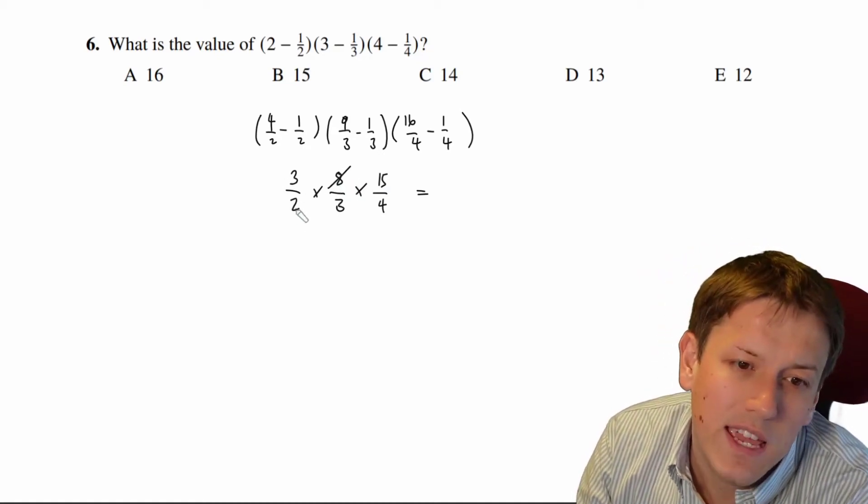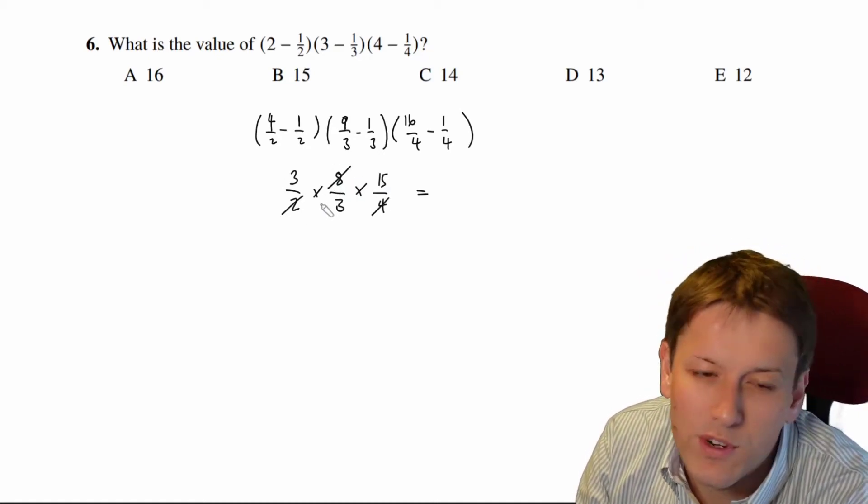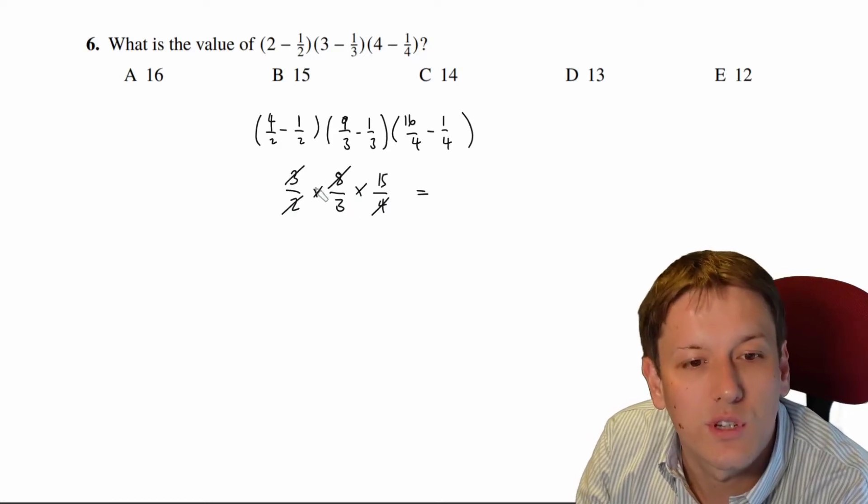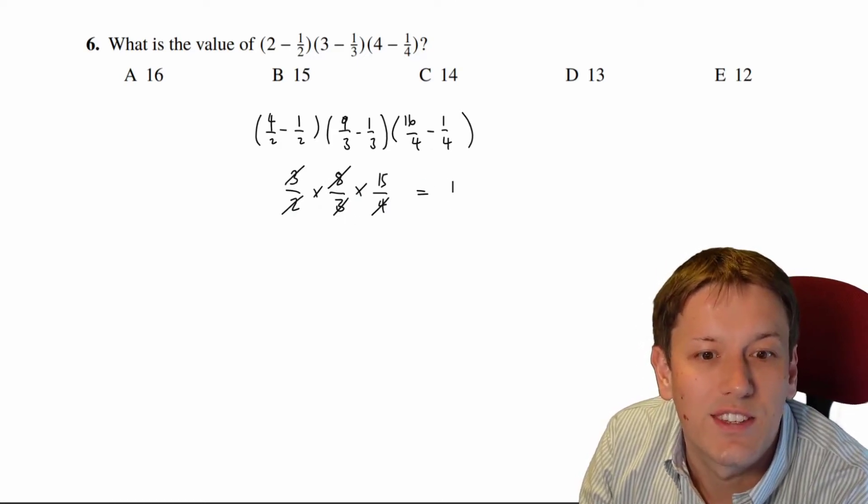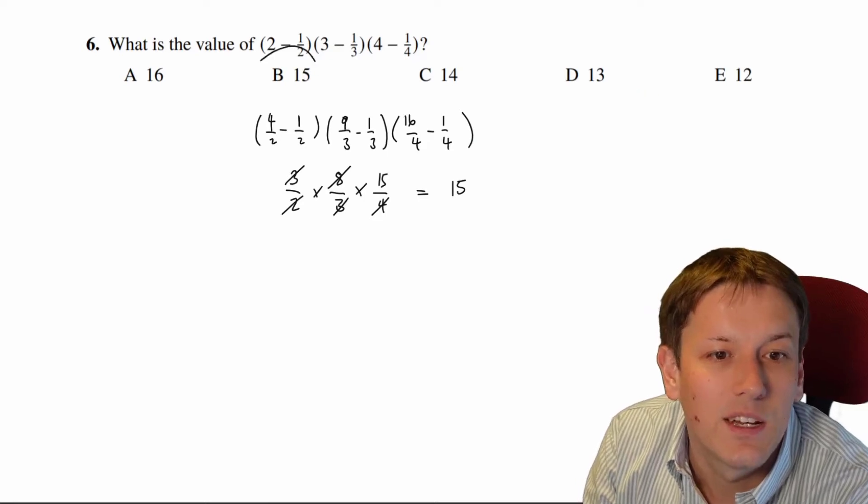Right, on the top here you've got a factor of 8, and there's a 2 and a 4, and 2 times 4 is 8, so they all cancel. And you've also got a 3 on the top and the bottom, so they cancel out, and so the answer here must just be 15, which is B.